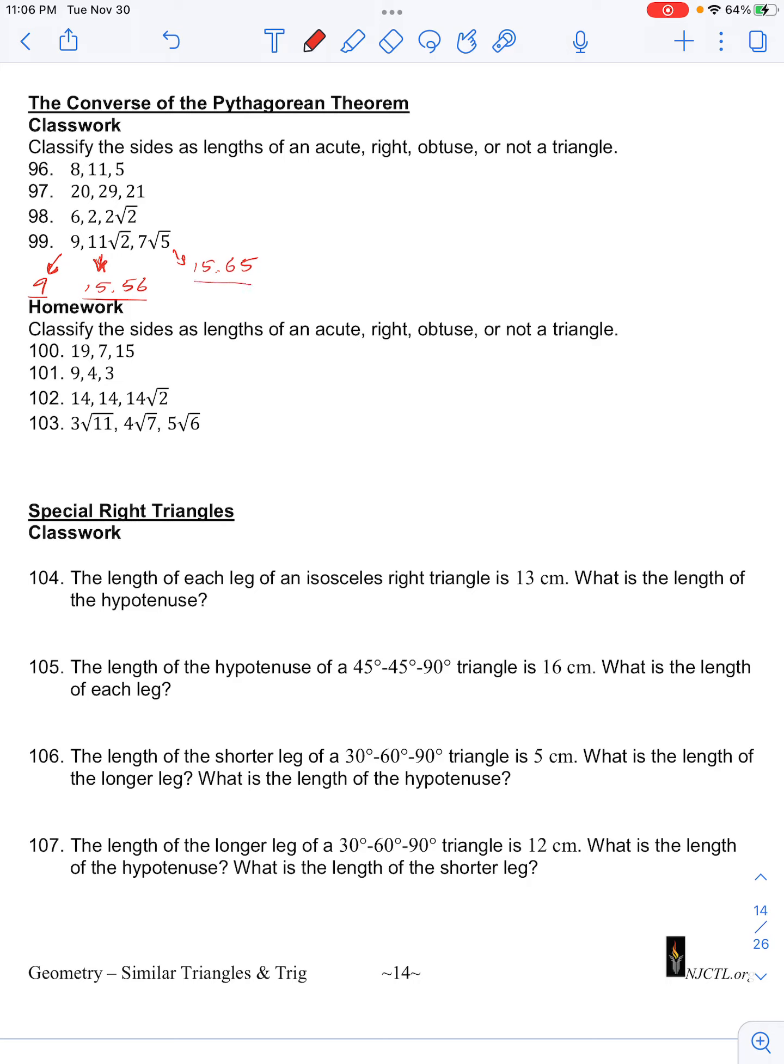Now we want to check if this triangle, which we know will be a triangle, will it be acute, right, or obtuse? So we know that the square of the longest side, which is 7√5 squared.